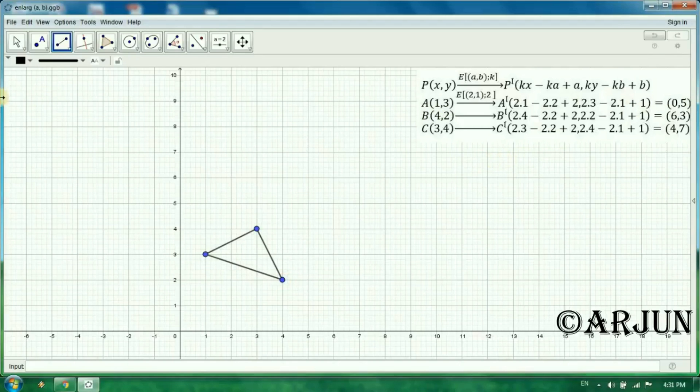Plot A prime, B prime, C prime. (0,5), this is your A prime. (6,3), this is your B prime. And (4,7), this is your C prime. Again join them. Then you will get A prime, B prime, and C prime triangle.